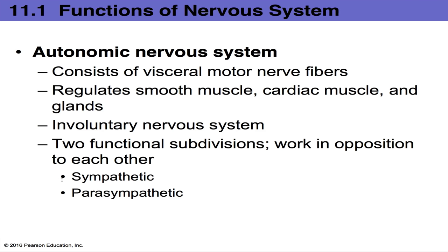The parasympathetic division produces the opposite effects, known as 'rest and digest.' When you're resting and at peace, your heart rate slows, breathing slows, and the sweat glands are deactivated. Another memory trick: parasympathetic starts with P, like peace — think about what happens to your body when you're calm and serene. The two divisions have opposite effects on the body.